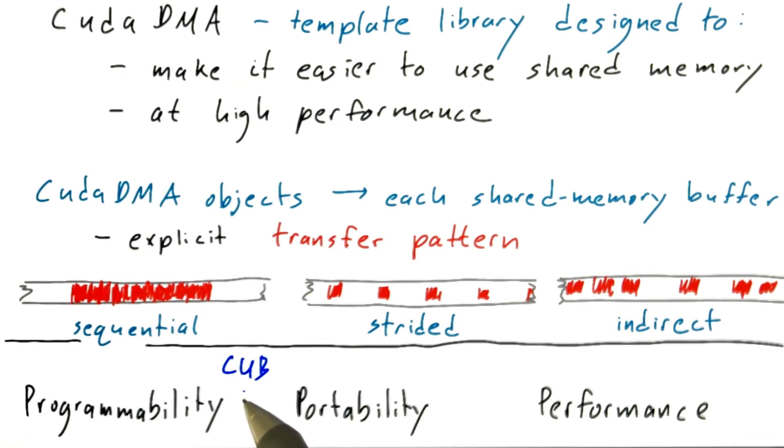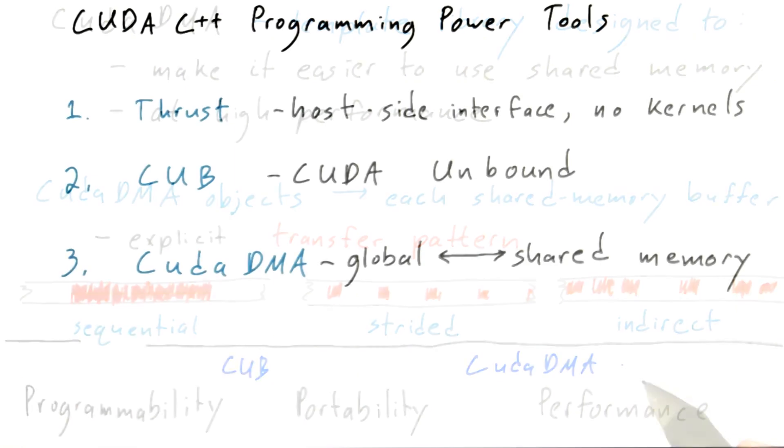As I said, these benefits really accrue to both Cub, which tackles the whole circle from bringing data in from global memory and doing the computation on it, as well as CudaDMA, which is just tackling the top part of that cycle where you're bringing memory into shared memory and then you're going to do your own operations on it.